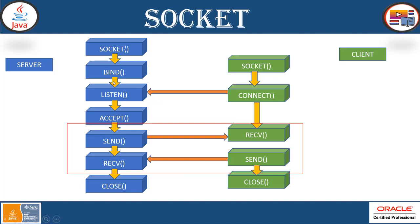Step one: the server instantiates a ServerSocket object, denoting which port number communication is to occur on. Next, we bind the IP address and port number using the bind method. The server invokes the accept method of the ServerSocket class — this method waits until the client connects to the server on the given port. Then the client instantiates a socket object, specifying the server name and port number to connect to. The constructor of the socket class attempts to connect the client to the specified server and port number. On the server side, the accept method returns a reference to a new socket on the server connected to the client's socket.